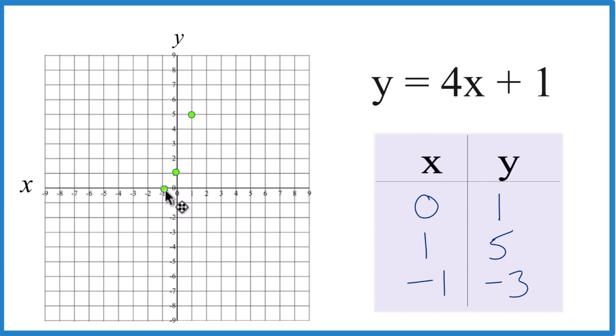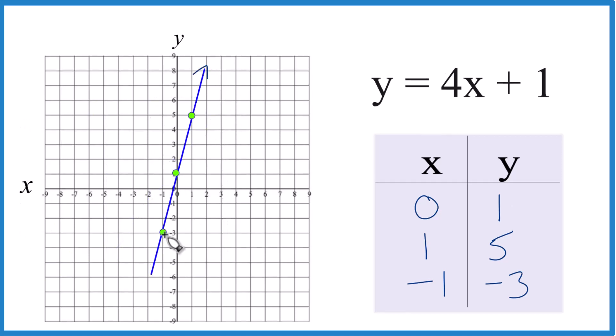x is negative 1, and y is negative 3. And you can see they all line up. Let's put a line through it. Then we put arrows to show it goes to infinity. That is the graph for y equals 4x plus 1, using a table of values. This is Dr. B, and thanks for watching.